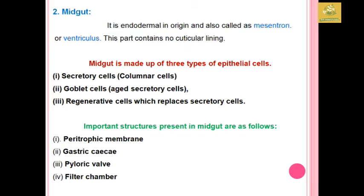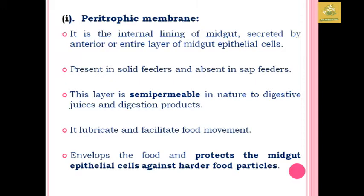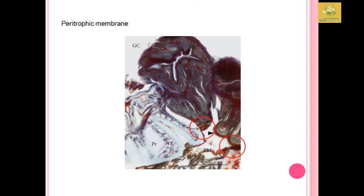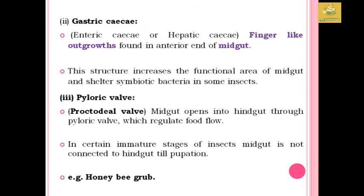The important structures present in the midgut are the peritrophic membrane, gastric caeca, pyloric valve, and the filter chamber. The peritrophic membrane is an internal lining of the midgut, secreted from the anterior and posterior layers of midgut epithelial cells. It is mainly present in solid feeders and absent in sap feeders. This layer is semi-permeable in nature; it facilitates digestion, lubricates and facilitates food movement, and envelops the food to protect the midgut epithelial cells from food particles. I have provided an image of the peritrophic membrane of the insect.